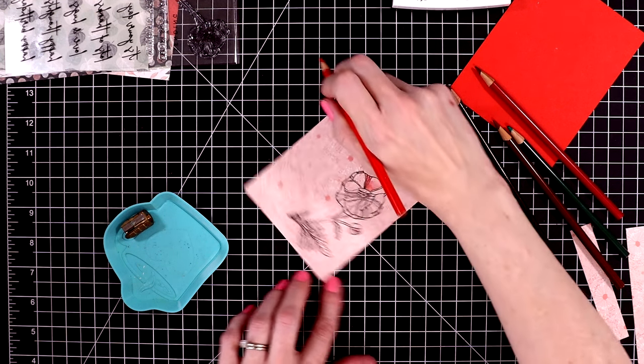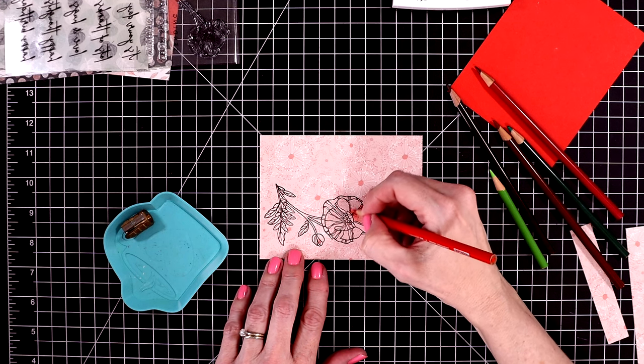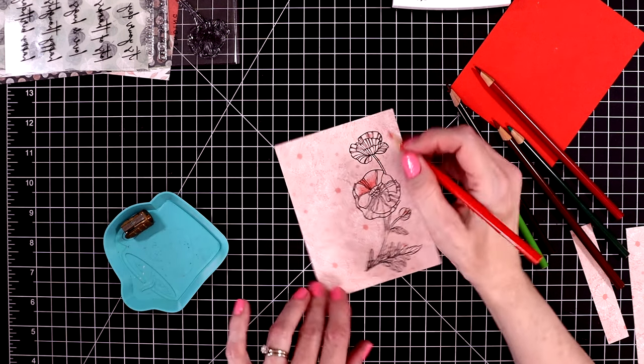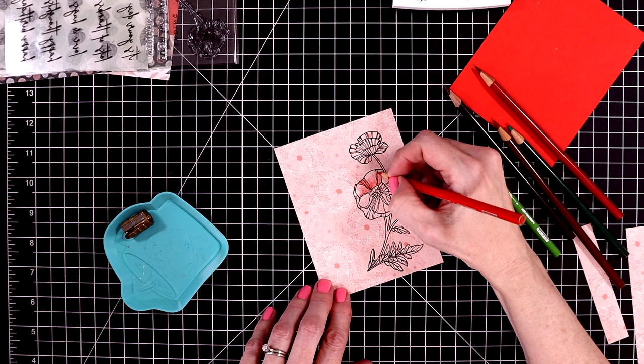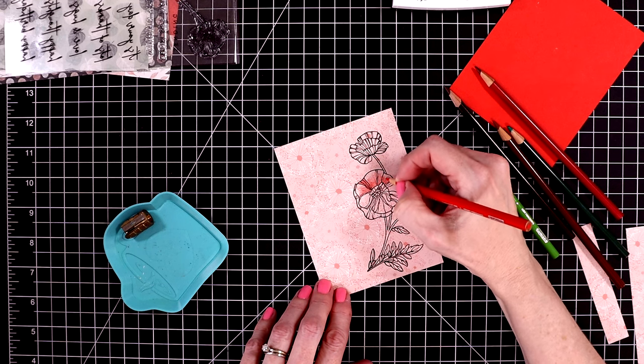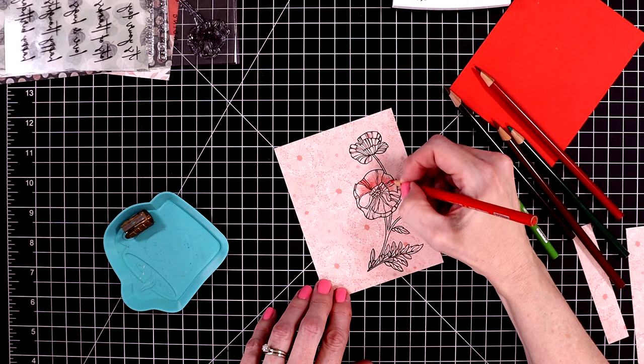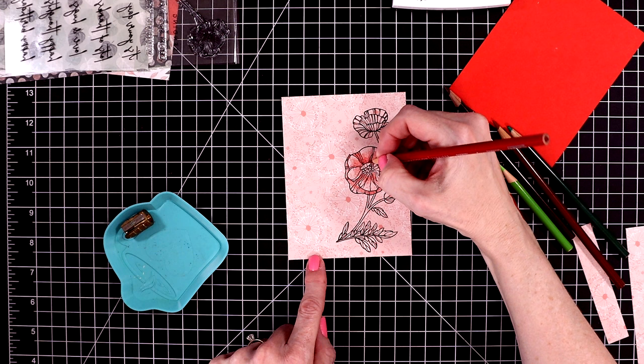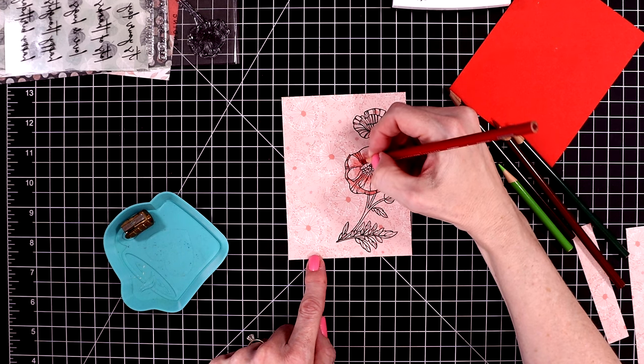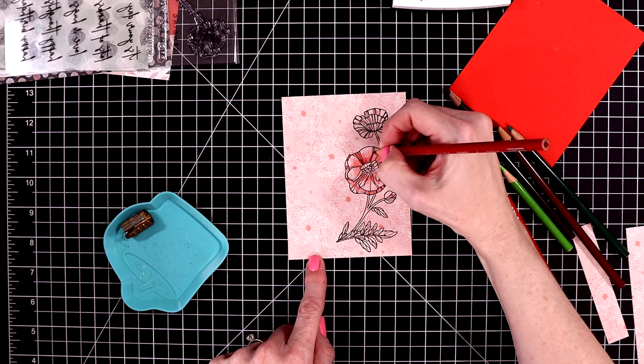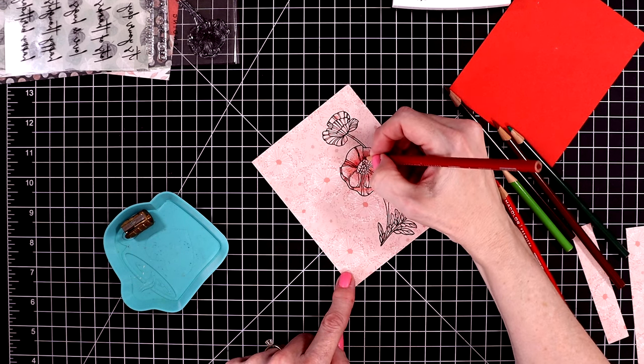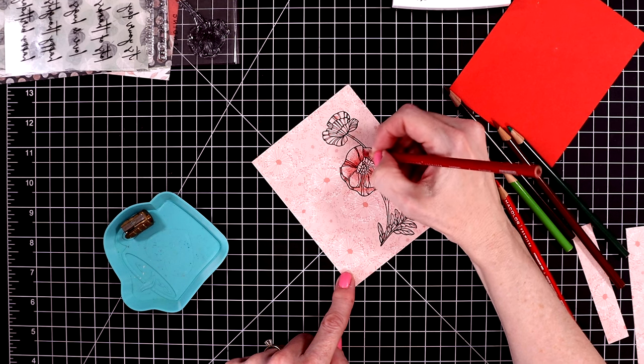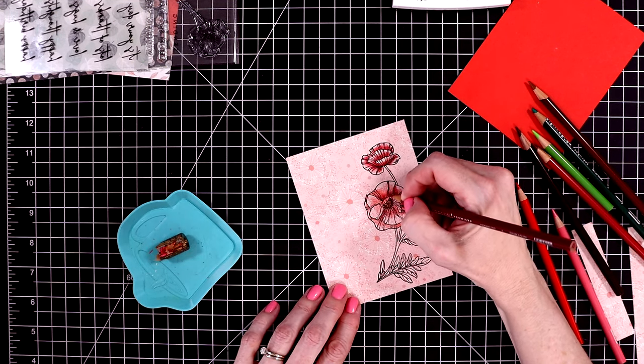And again, I'm just going to show some of the coloring for the sake of time. But I think you understand what I'm getting at here. And then once I've put down my lightest layer, I'm going to come in with a medium red. Just add a little bit of shading and dimension to these flowers. I'm mostly putting the color at the base of the petals and where they overlap. And then I come in with a really dark red.